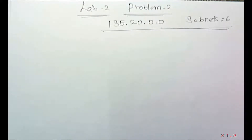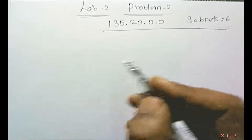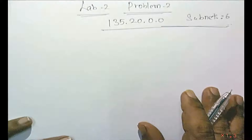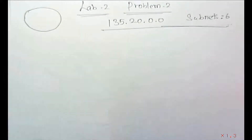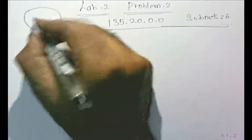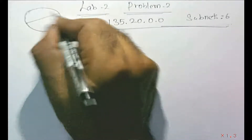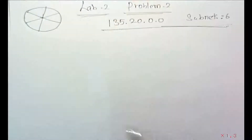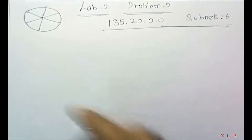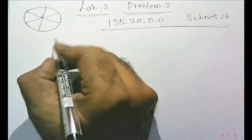Lab 2, problem 2. We have a network ID 135.20.0.0, and the number of subnets needed is 6. This is a Class B network, and we have to divide it into 6 equal subnets. That is the concept, and now I am going to answer this problem.